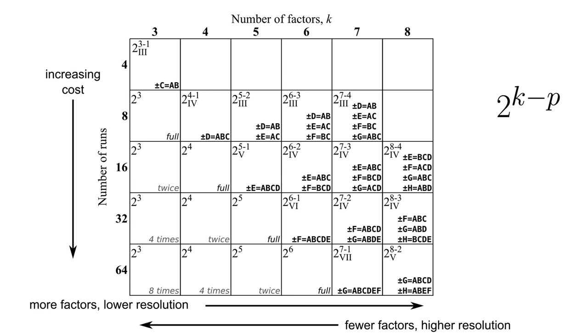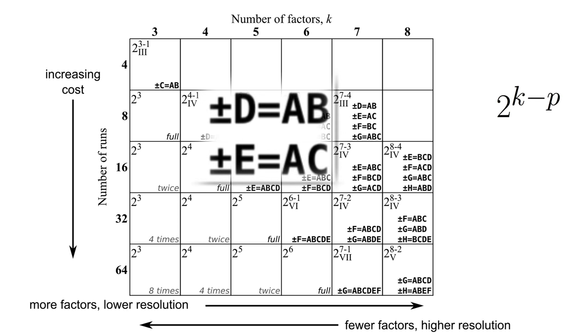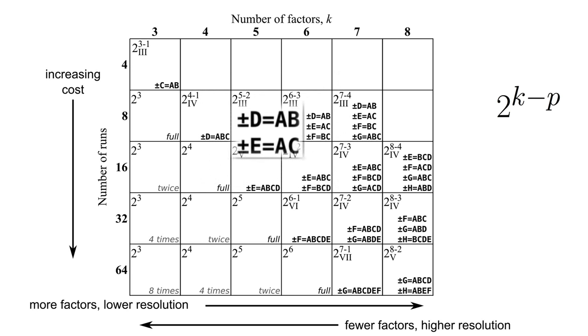Let's focus on these two other items in the entry. D equals A times B, and E equals AC. We call these two entries the generators, because they tell us how to create or generate the D and E factors in our experiment.